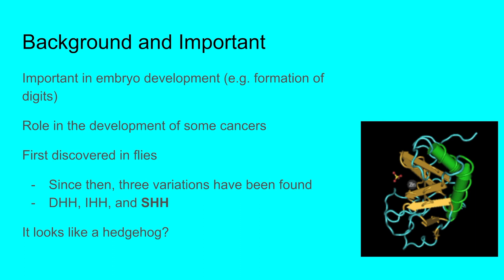The sonic hedgehog signaling pathway is a pretty important one that we don't know a lot about, but we do know that it has a role in embryo development — like the formation of your fingers, for example (those are what digits are, if you were wondering). It also has a role in the development of some cancers, such as basal cell carcinoma, and was first discovered in flies.